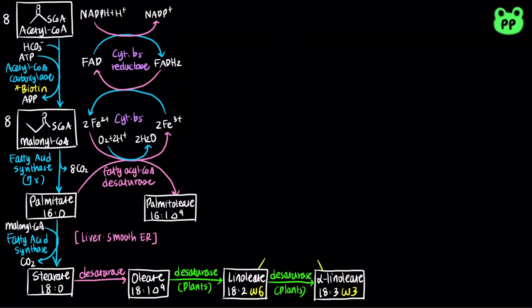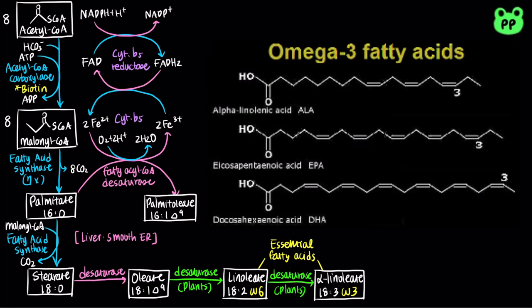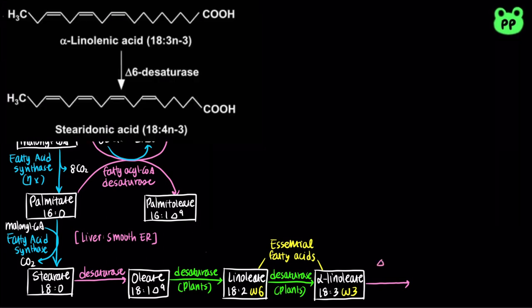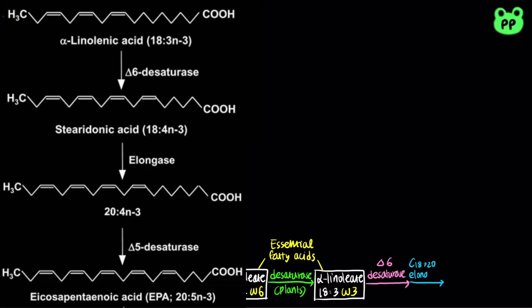Linoleate and alpha-linoleate are considered essential fatty acids since mammals can't synthesize them and must acquire them from diets. Alpha-linoleate serves as a precursor to other omega-3 polyunsaturated fatty acids, such as EPA and DHA. First, alpha-linoleate is desaturated at the 6th carbon, followed by elongation and desaturation at the 5th carbon to produce the omega-3 fatty acid EPA, which stands for icosapentaenoic acid.